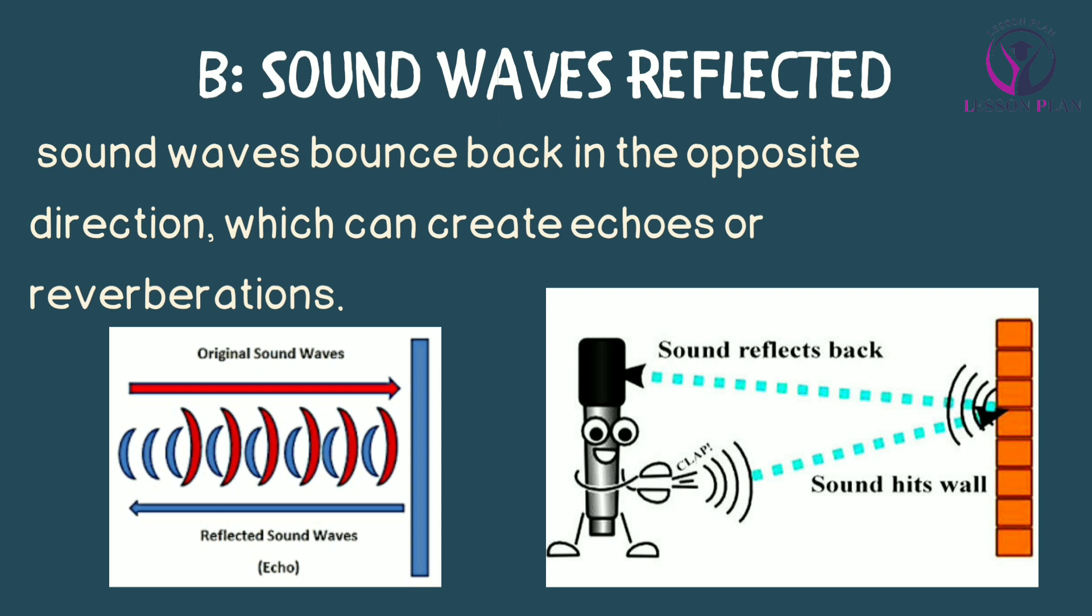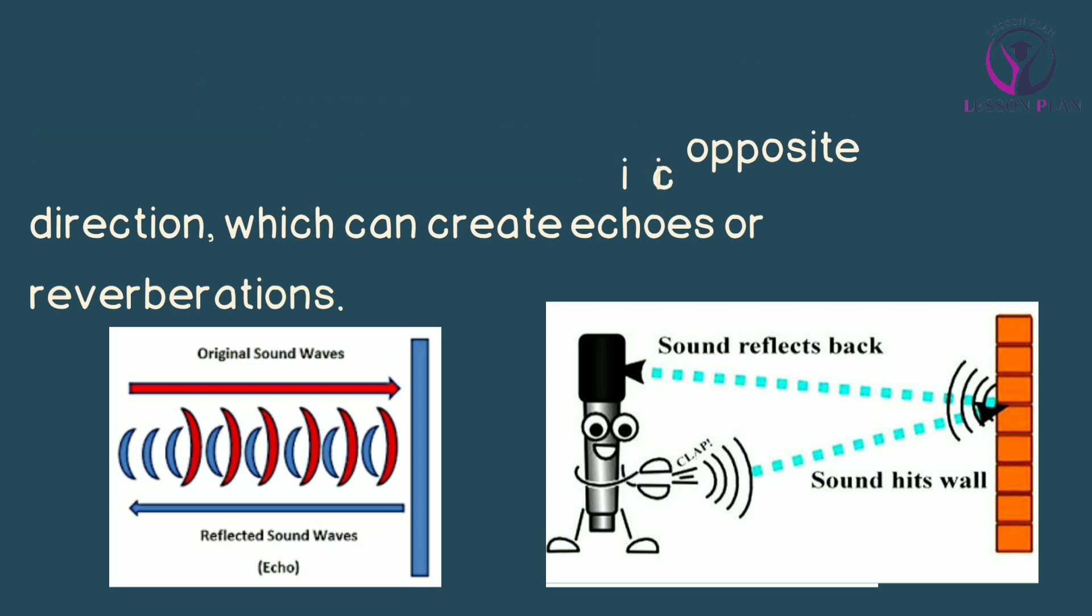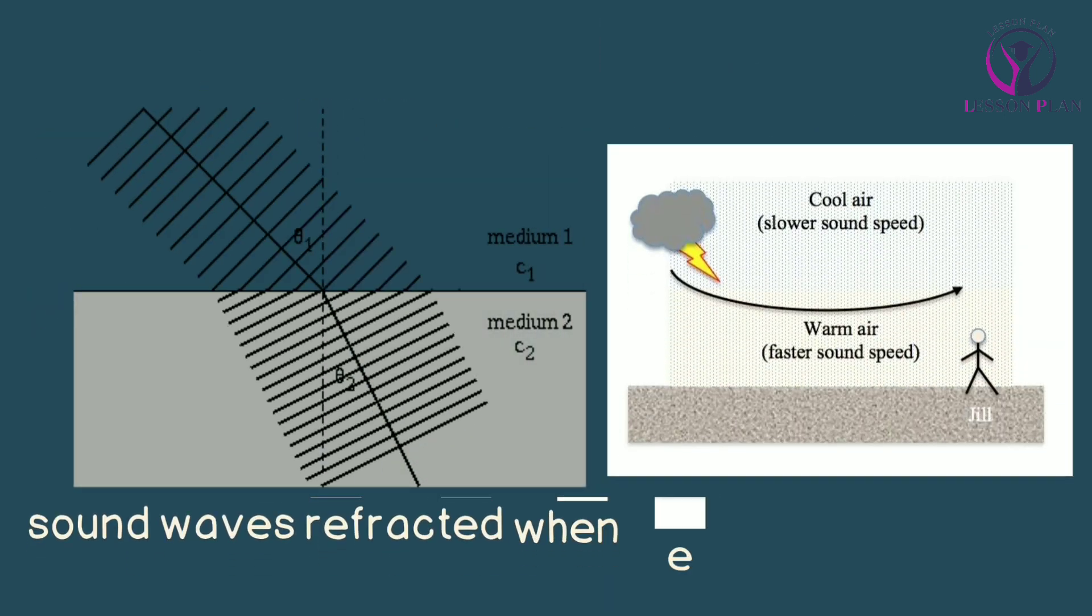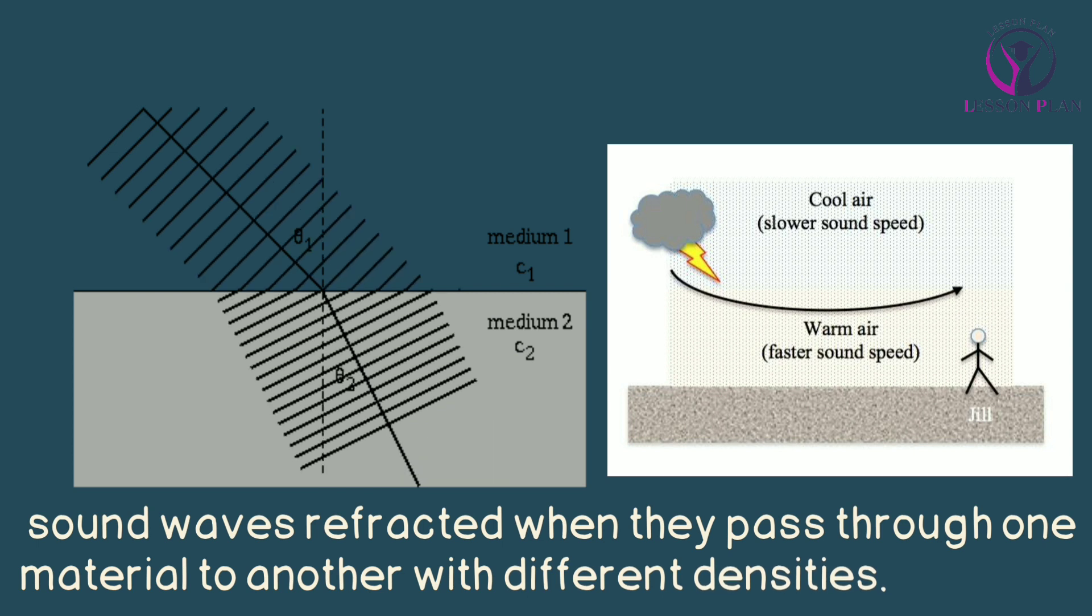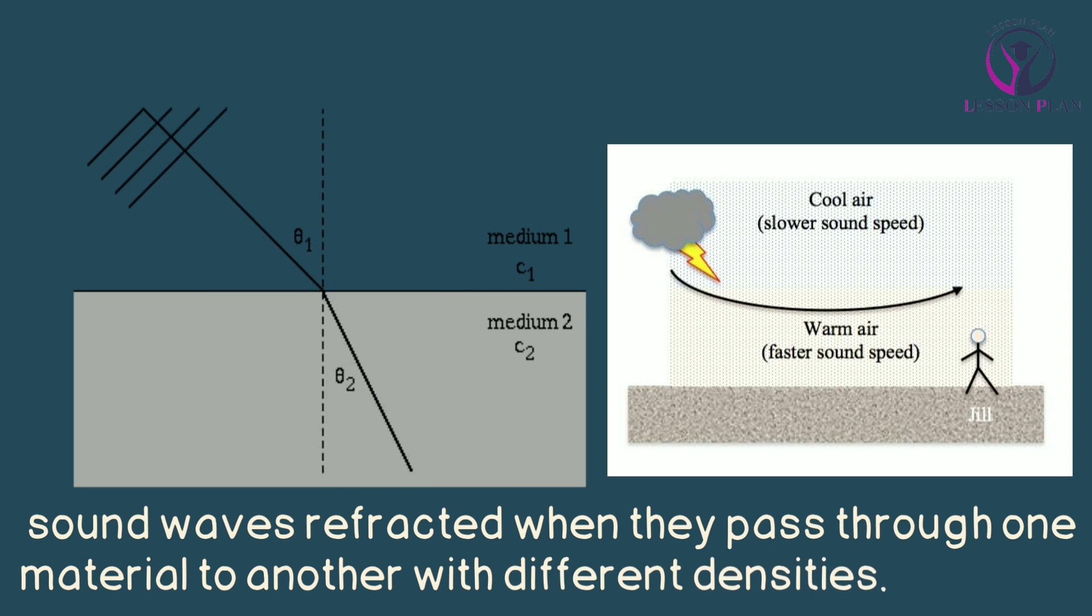Finally, sound waves can be refracted when they pass through different materials with different densities. Refraction occurs when the direction of a sound wave changes as it passes through a medium, which can cause a sound to be distorted or muffled.